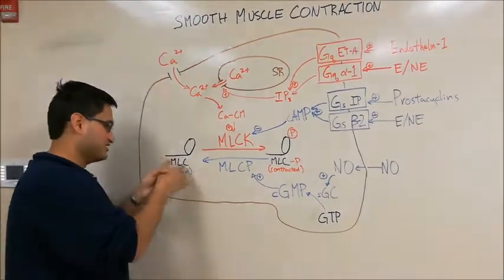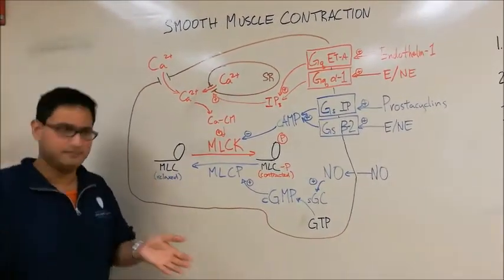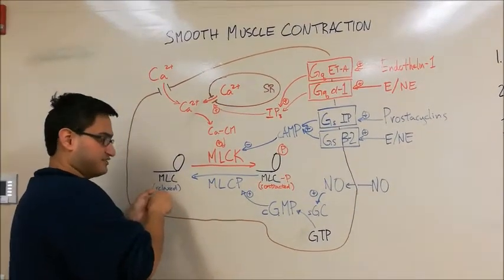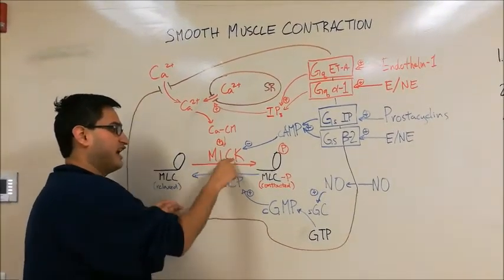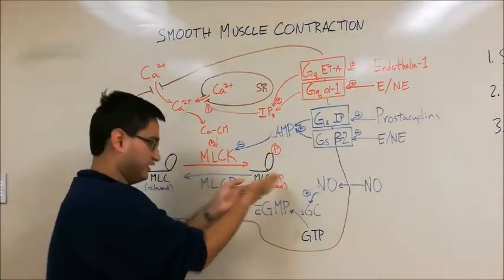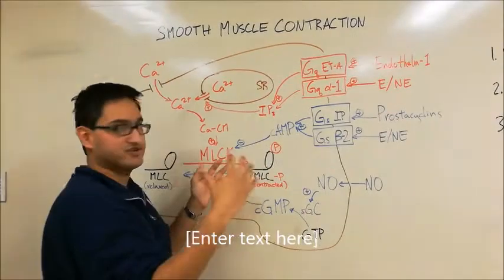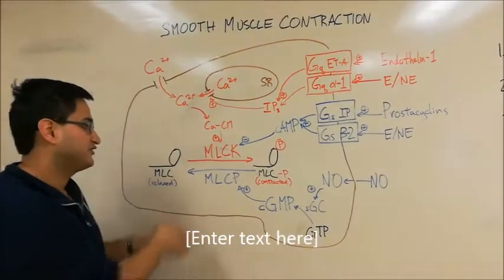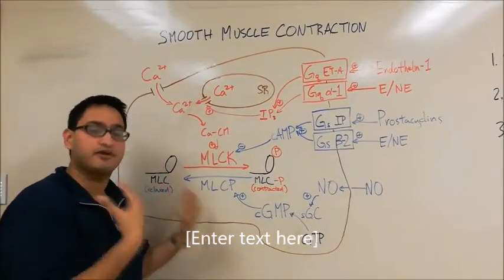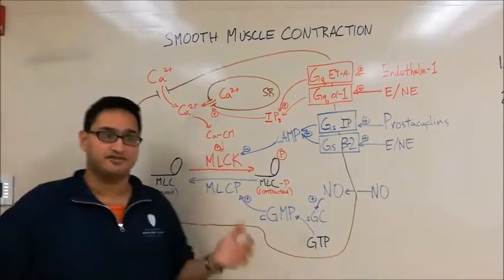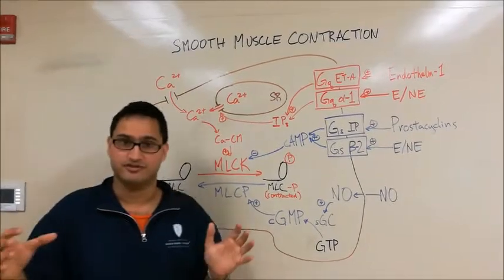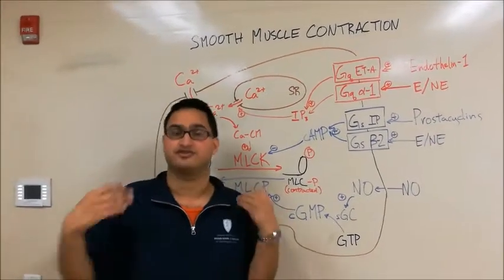Here I've drawn a myosin light chain molecule — I'll be calling it just myosin. As you can see, this is in the relaxed state. When myosin light chain kinase, or MLCK, phosphorylates myosin, it becomes phosphorylated, and that's going to cause the muscle to contract. Therefore, MLCK promotes smooth muscle contraction, and in the context of blood vessels, vasoconstriction. Smooth muscle contraction in arteries is going to cause vasoconstriction.